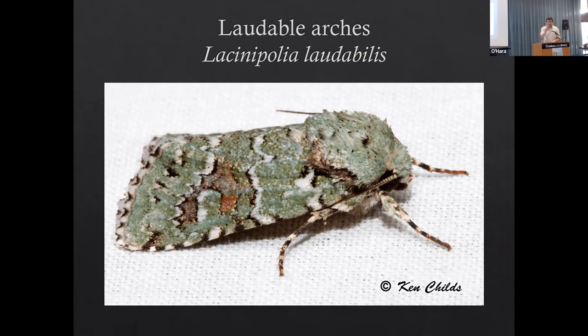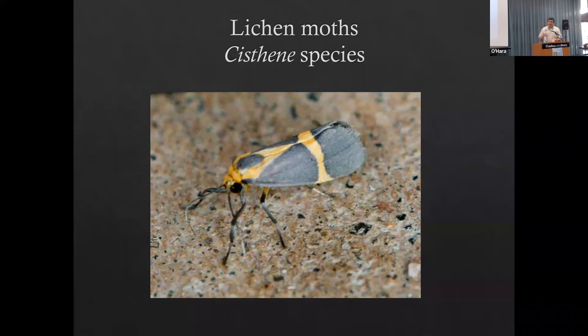Speaking of lichen, some of our moths don't eat plants at all - they actually eat lichen. This is one called the lichen moth. The caterpillars of this group eat the lichen, or the fungus and bacteria that is found on some plants.